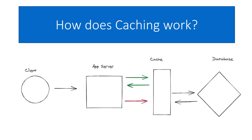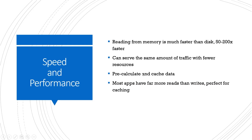If we look at how it works, you can see we have our client that makes requests to our server, and new here is that in between the database and our app server we have our cache. If the data is already in the cache it can be served directly back to our application, which then sends it back to the client. If we don't have that data in the cache, we have to make a round trip to the database. Delivering data from cache is much more efficient — reading from memory gives you 50 to 200 times faster read performance compared to reading from your database.